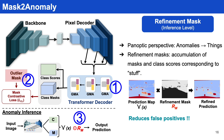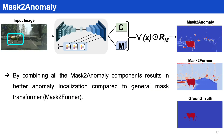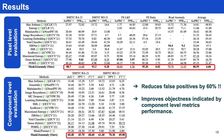By combining all the components of Mask2Anomaly, we are able to better localize anomalies with minimal false positives. Coming to the main result, we are able to reduce false positives by 60% when compared with all prior methods, and we are able to improve the object-level metrics seen in the component-level matrix performance.